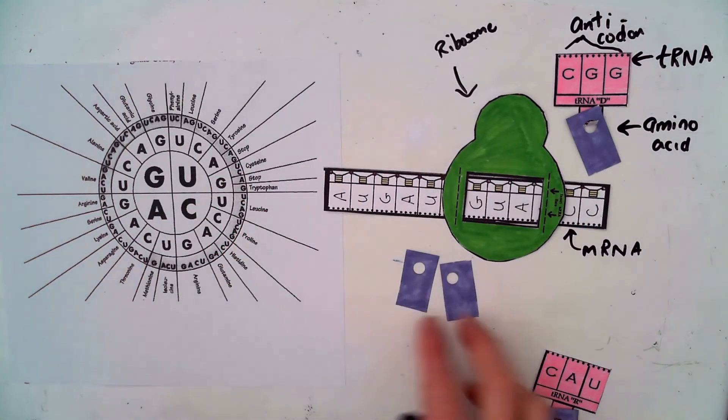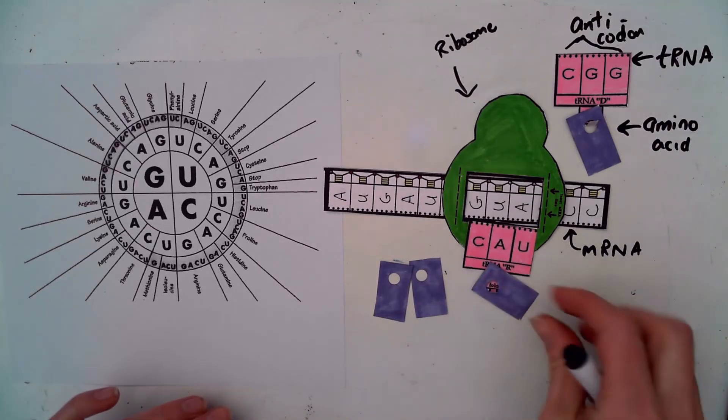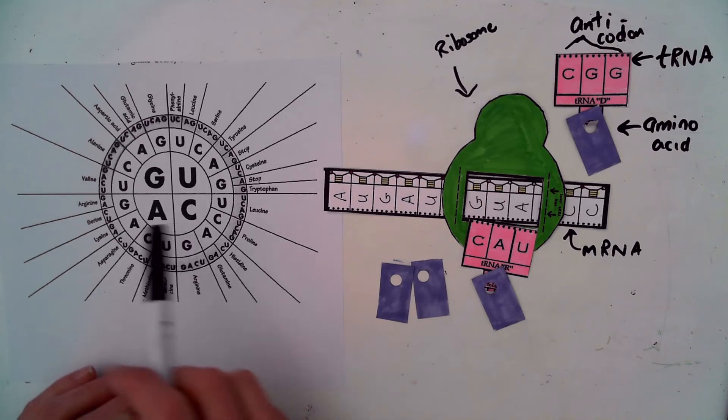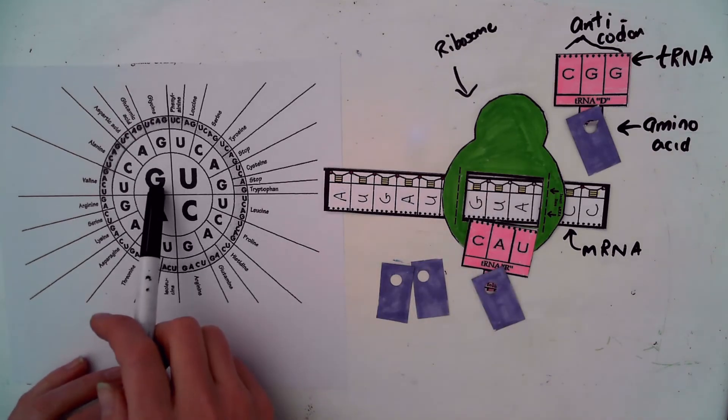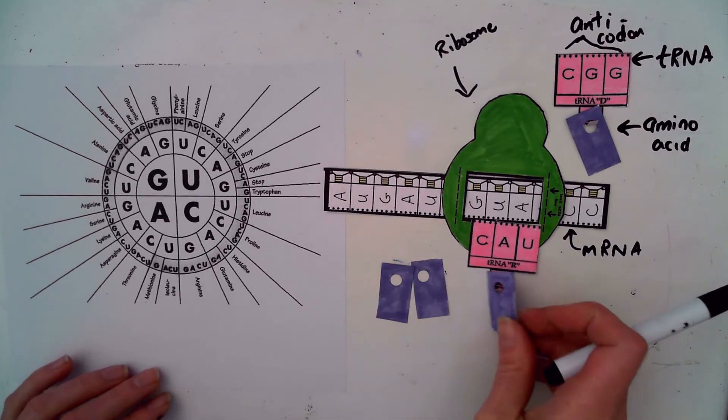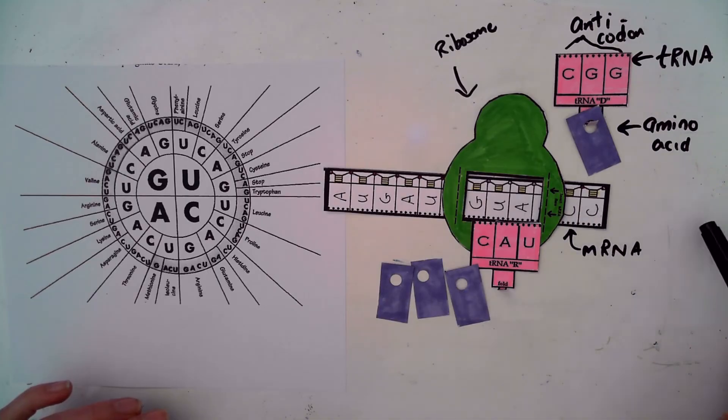Drop off isoleucine and we slide the mRNA one more time. GUA is going to pair with CAU. And which amino acid must this be? Well let's see. GUA, valine would be this amino acid. And we would continue this process. This mRNA would be much longer than it is here in my picture.